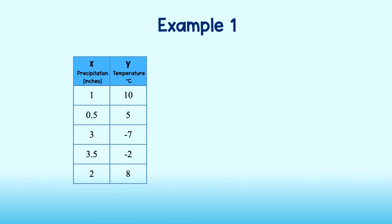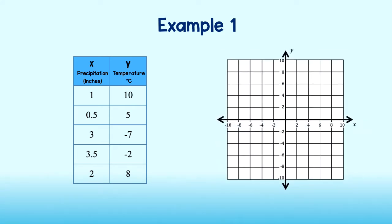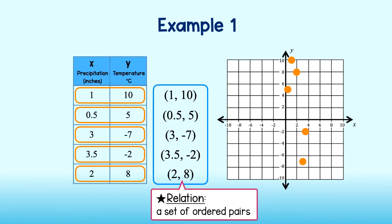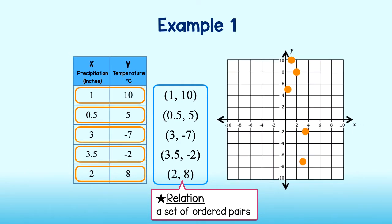In addition to a table we can also graph the relationship between the amount of precipitation and temperature. To do so each pair of values in the table will become an ordered pair. We can then easily graph each of these values. The mathematical term for any set of ordered pairs is called a relation. We can represent relations with both tables and graphs.